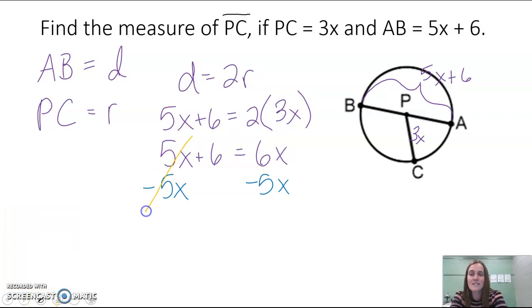5x minus 5x is 0. It cancels out. That's the whole point of subtracting it. And so we have 6 equals 6x minus 5x is 1x, or x is equal to 6. You don't normally write that coefficient of 1.